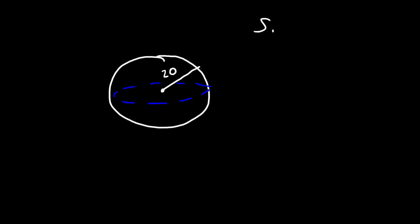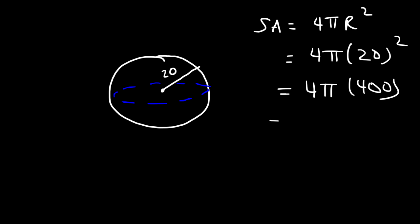The formula to calculate the surface area is straightforward. It's 4 pi times r squared. So it's 4 pi times 20 squared. 20 times 20 is 400, and 4 times 400 is 1,600. So the surface area is 1,600 pi square units.